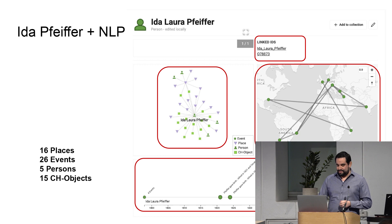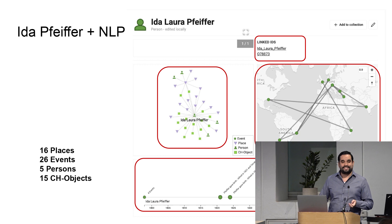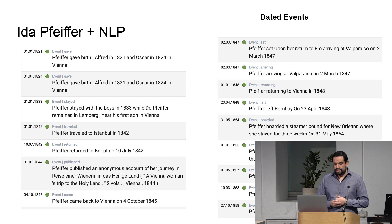Likewise, with the timeline we can see more density with the events. Just to quantify: instead of one place, now we have 16. Now we have 26 events and five people — not only her in the center, but there are other people involved in her life — and 15 cultural heritage objects.